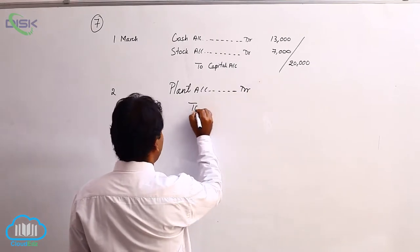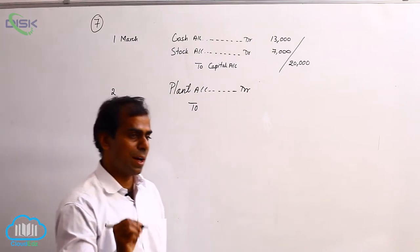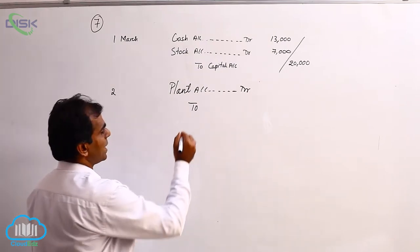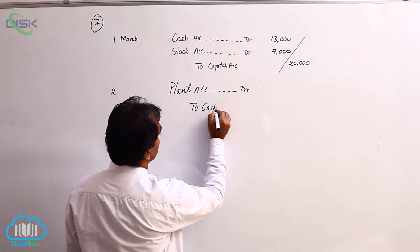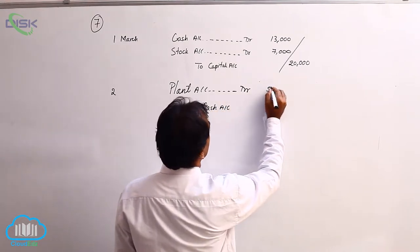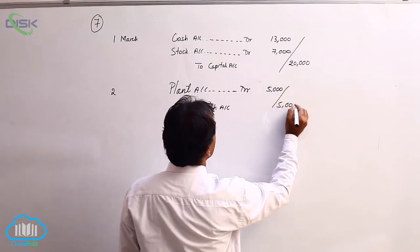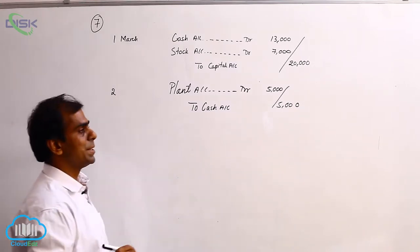So we would have paid cash for it. Cash again real account, it is going out. So therefore we will credit cash based on the rule credit what goes out. The amount being 5000. Narration would be being plant purchased.